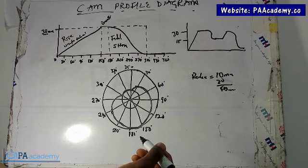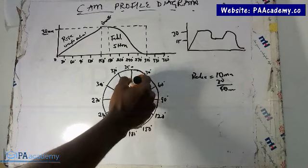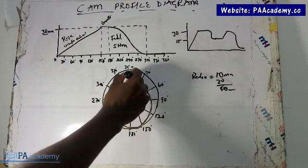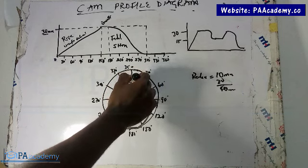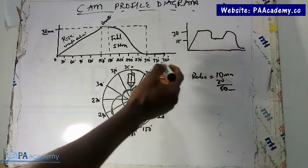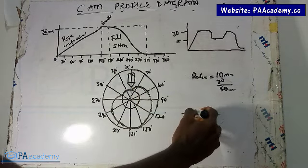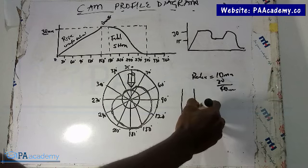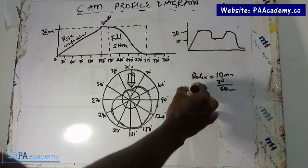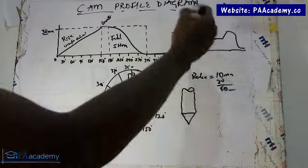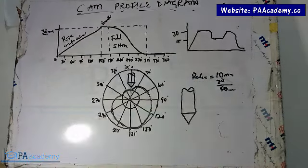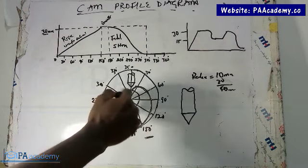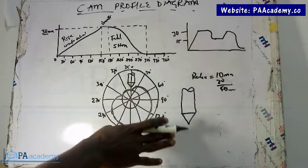Now for the cam follower: at 0° you'll have the follower sitting at the bottom of the cam profile, and at the top you'll see it extending above. That represents the point-edge follower. The cam profile, when all the points are joined, will look like an irregular oval — wider on one side where the rise occurs and conforming to the smaller circle where it dwells. That is the process of drawing the cam profile.